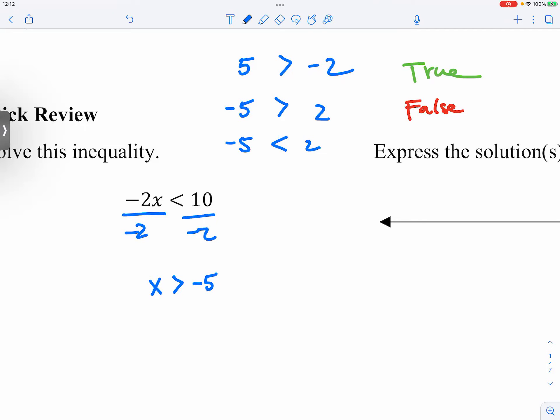So when we multiply by a negative 1 or divide by a negative number, any negative number, not just negative 1, multiply or divide by a negative number, we are negating the numbers, and also we are negating the relationship.